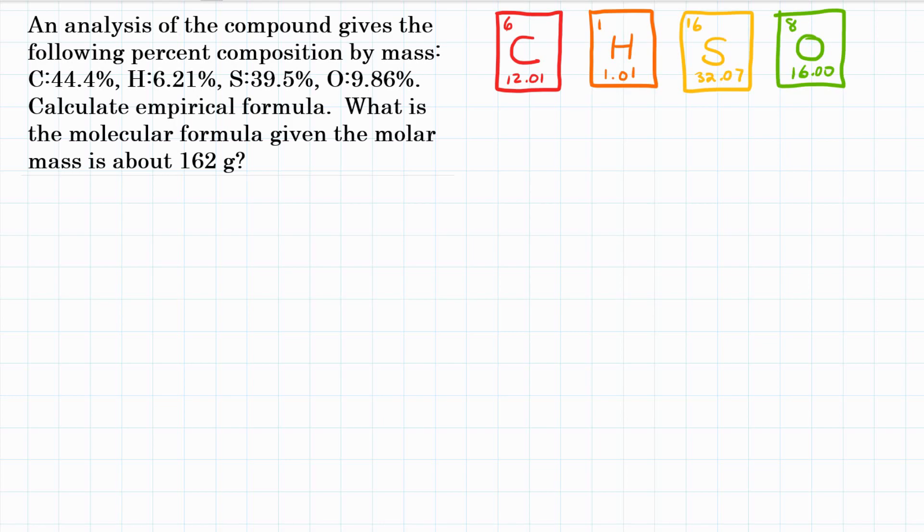That's going to be the majority of it. And then at the end, one final step to calculate the actual formula, the molecular formula, based off the empirical formula, which is the lowest whole number ratio. So we have carbon, hydrogen, sulfur, and oxygen. And we have percentages for those elements for this compound.